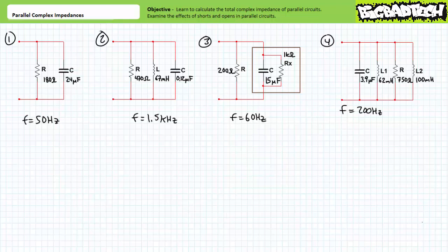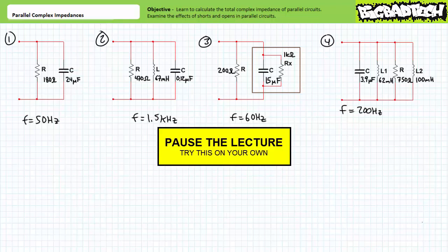By all means, pause the lecture and try this on your own. Unless explicitly stated otherwise, like in problem three, you can assume all capacitors are ideal and possess no leakage path in parallel. Express all your answers using proper engineering format, and express the complex impedance using polar format including magnitude and direction.